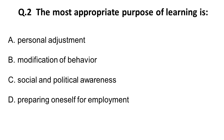Question 2: The most appropriate purpose of learning is — A) personal adjustment, B) modification of behavior, C) social and political awareness, D) preparing oneself for employment. The correct answer is B: modification of behavior. I hope you answered this correctly.